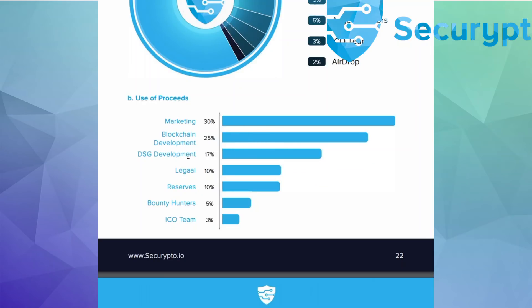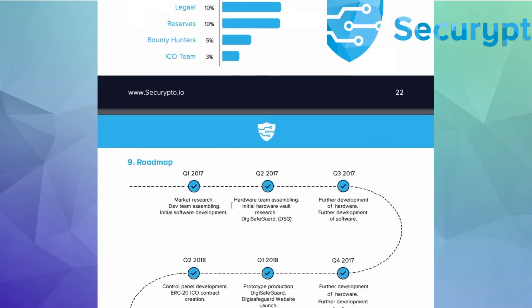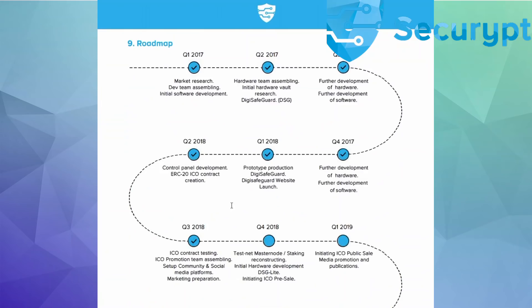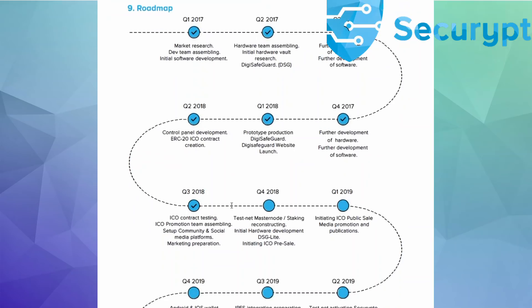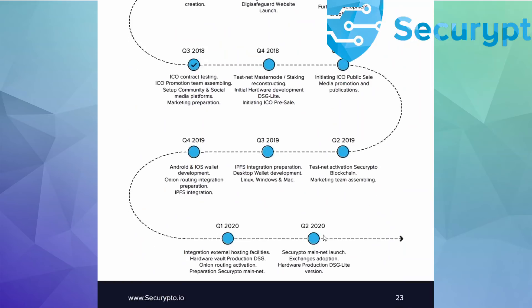Use of proceeds: thirty percent marketing, twenty-five percent blockchain development, DSP development, ICO team, and five percent bounty hunters. Here is the road map — you can see on the screen. Quarter four target: eighty thousand dollars. I tested the masternode — it was a low-entry ICU for me. And further on it goes.